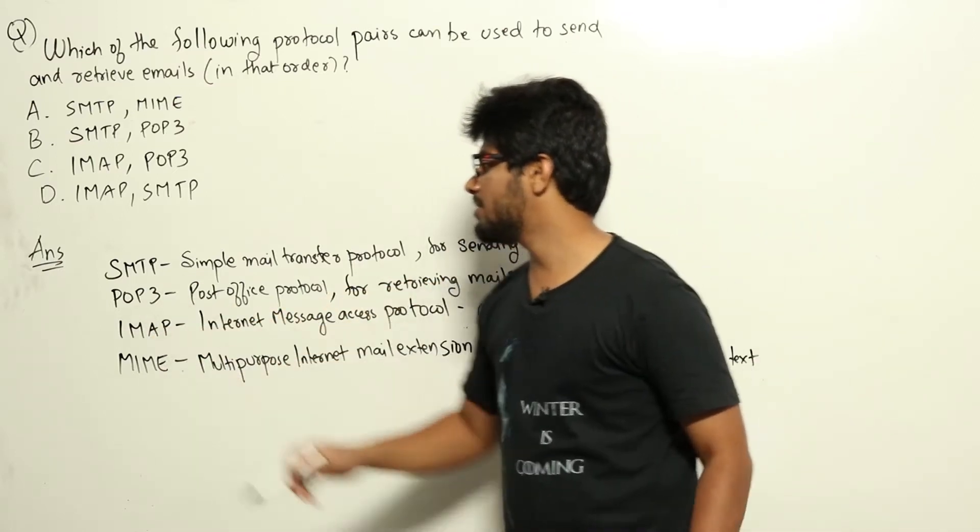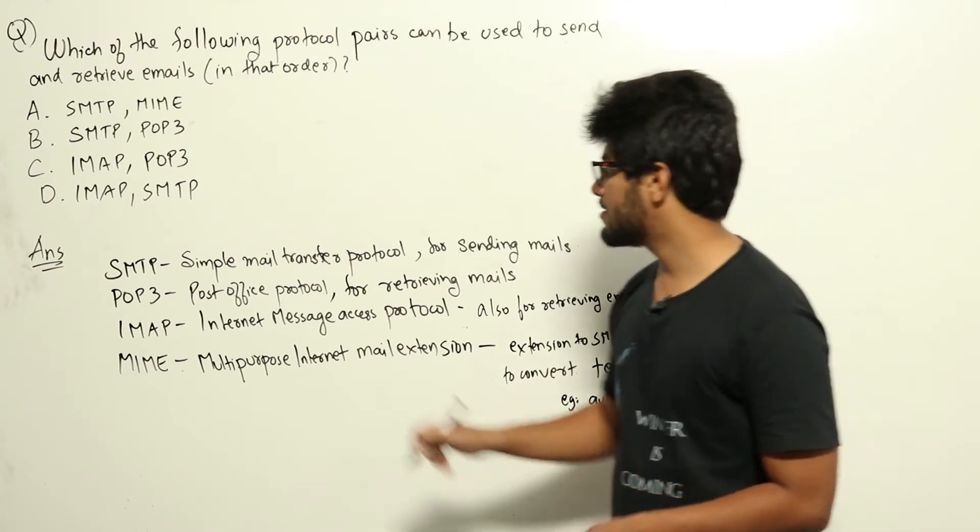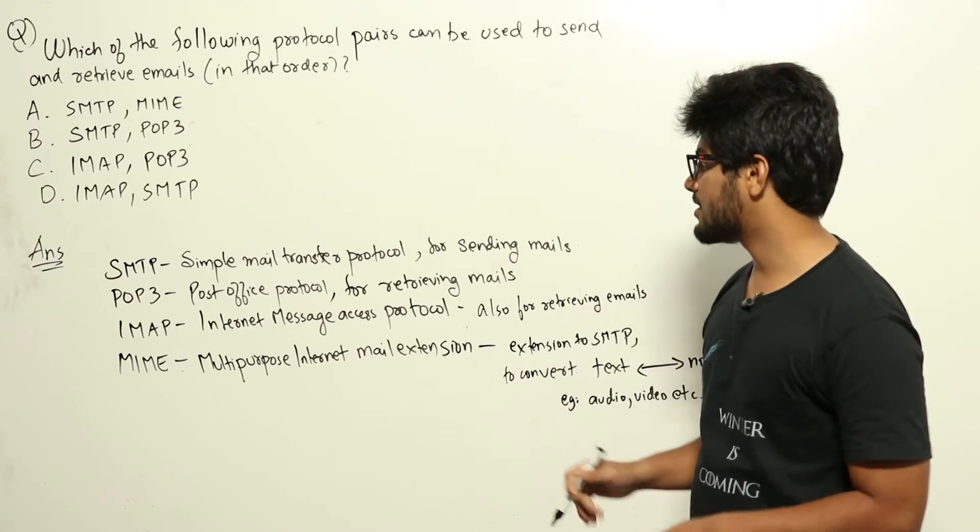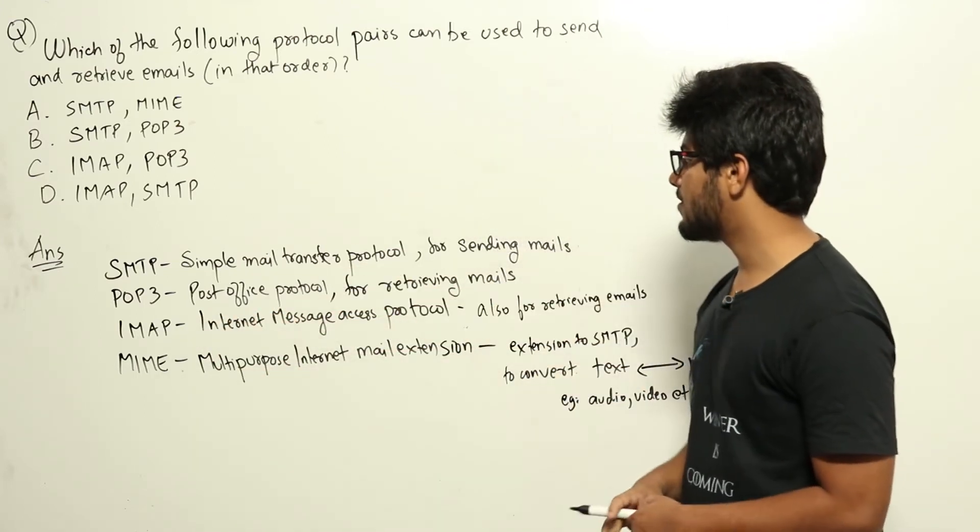The difference between IMAP and POP3 is that POP3 will download the email to your workstation, whereas using IMAP you can check it on the server itself. There is no need to download it to your workstation if you are using IMAP. So POP3 and IMAP both are used to retrieve emails.